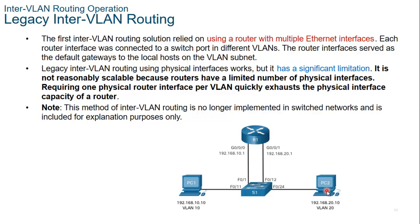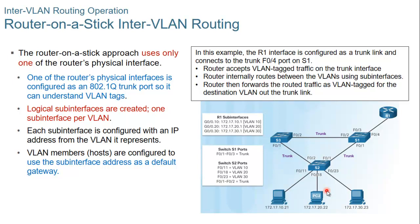I am introducing legacy routing here so that we know how inter-VLAN routing grew. The router-on-a-stick inter-VLAN routing approach uses only one of the router's physical interfaces. Rather than use multiple interfaces like the legacy approach, this approach uses just one interface, configured as an 802.1q trunk port so it can understand VLAN tags. Normal routers don't handle VLANs, so you have to configure the router with 802.1q so that it can understand the tags. Logical sub-interfaces are created — one sub-interface per VLAN.